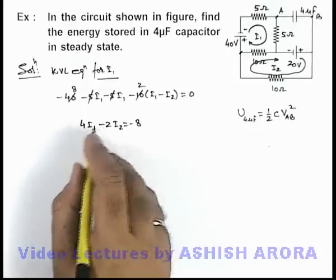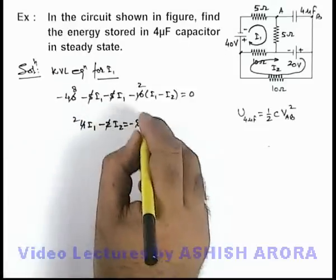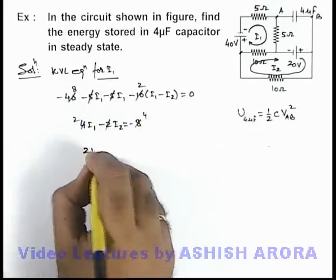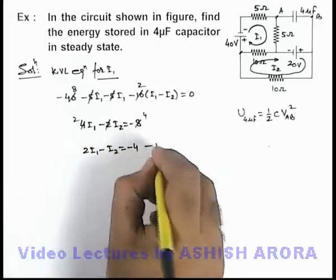Further we can simplify this as this 2 gets cancelled out with this 4, so 2i1 minus i2 equals minus 4. This is equation 1.